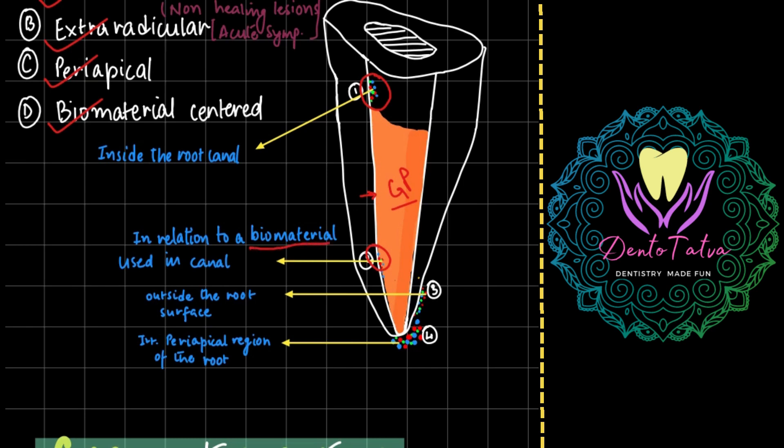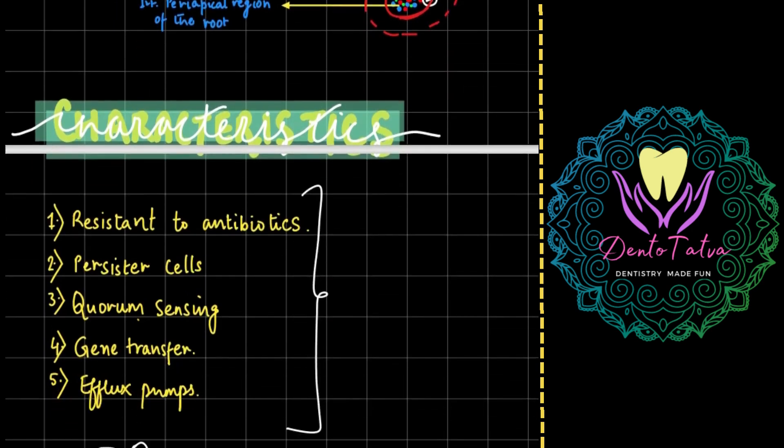The third one is outside the root surface, primarily found in your secondary endodontic infections. This is the root surface and outside the root surface the biofilm known as the extraradicular. The periapical one is if there is any kind of over-extruded or over-obturated obturation, endodontic treatment has been done. So periapical, in relation to this entire assembly, there will be a biofilm known as a periapical biofilm.